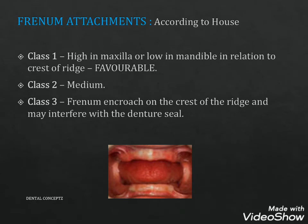Frenum attachments according to House: In Class 1, the frenum attachment is high in the maxilla or low in the mandible relative to the crest of the ridge — the most favorable situation. In Class 2, the frenum attachment is medium. In Class 3, the frenum encroaches on the crest of the ridge and may interfere with the denture seal.